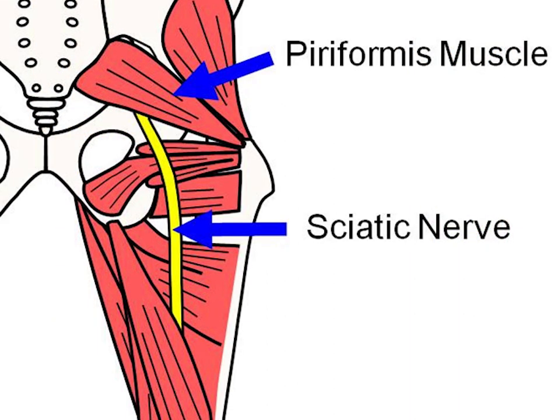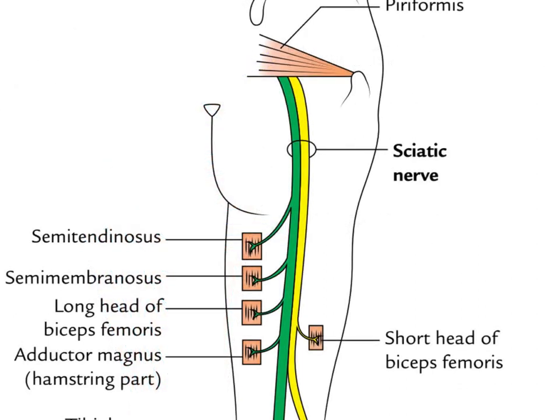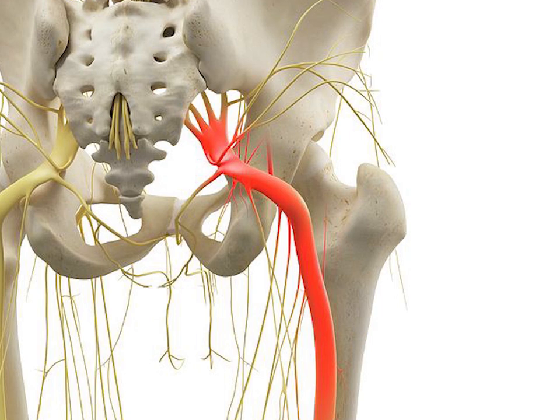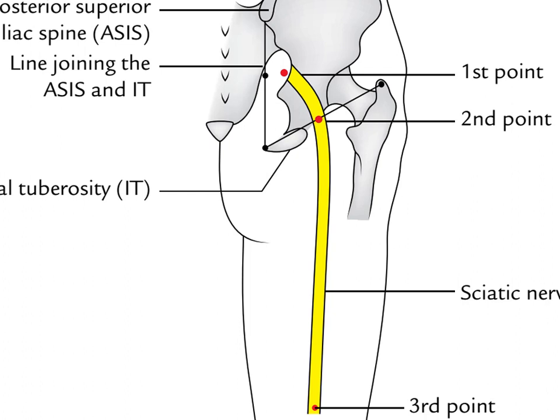It contains fibers from both the anterior and posterior divisions of the lumbosacral plexus. In humans, the sciatic nerve is formed from the L4 to S3 segments of the sacral plexus, a collection of nerve fibers that emerge from the sacral part of the spinal cord. The lumbosacral trunk from the L4 and L5 roots descends between the sacral promontory and the S1 to S3 roots emerge from the ventral sacral foramen. These nerve roots unite to form a single nerve in front of the piriformis muscle.